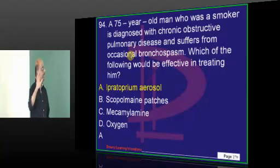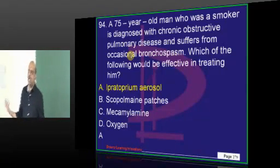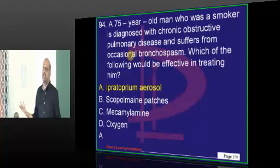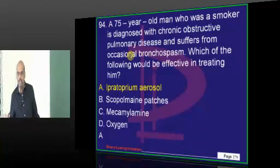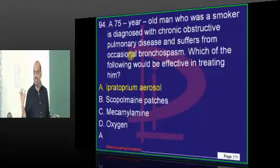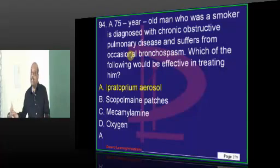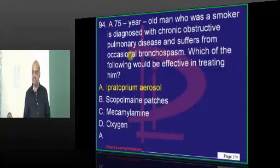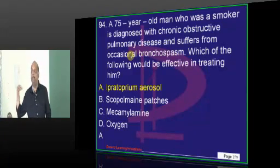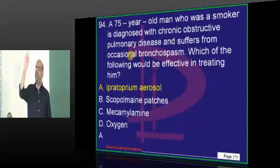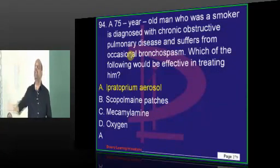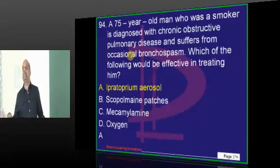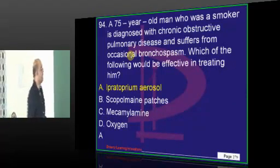75-year-old smoker with COPD — what is the cause of bronchoconstriction in COPD? It is excess vagomimetic activity, not decreased sympathomimetic activity. Excess vagomimetic activity — hence we use a vagolytic agent, an atropine congener: ipratropium bromide. This is the drug of choice to treat bronchospasm of COPD.